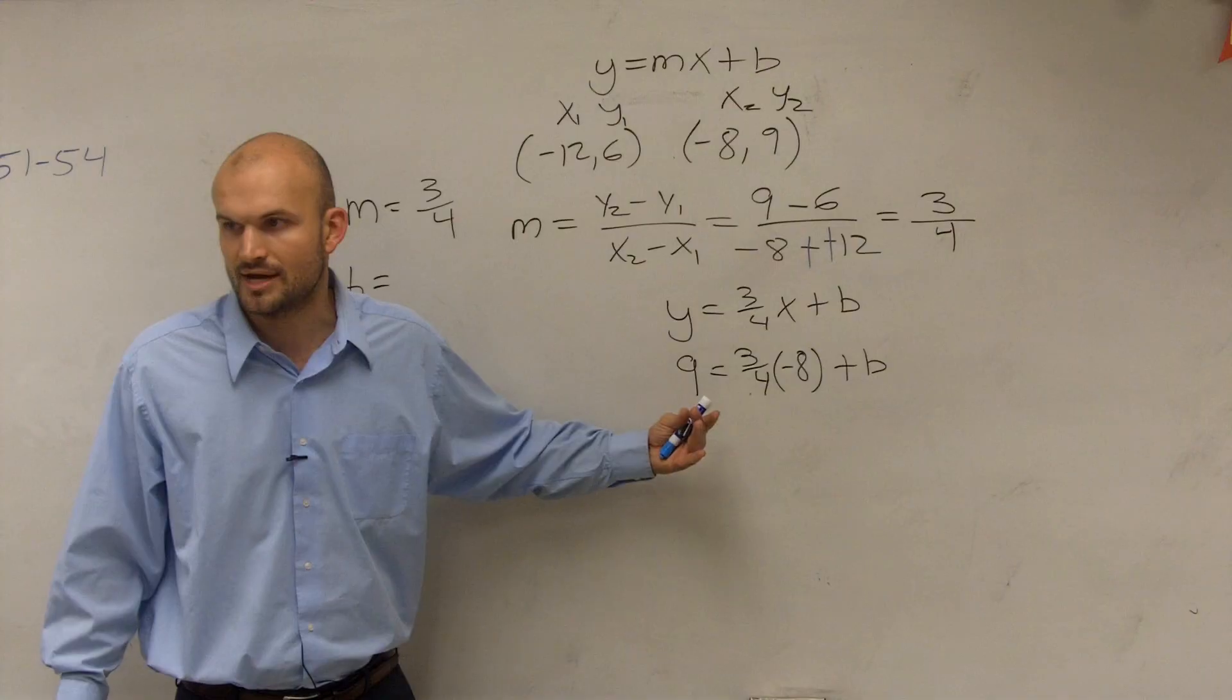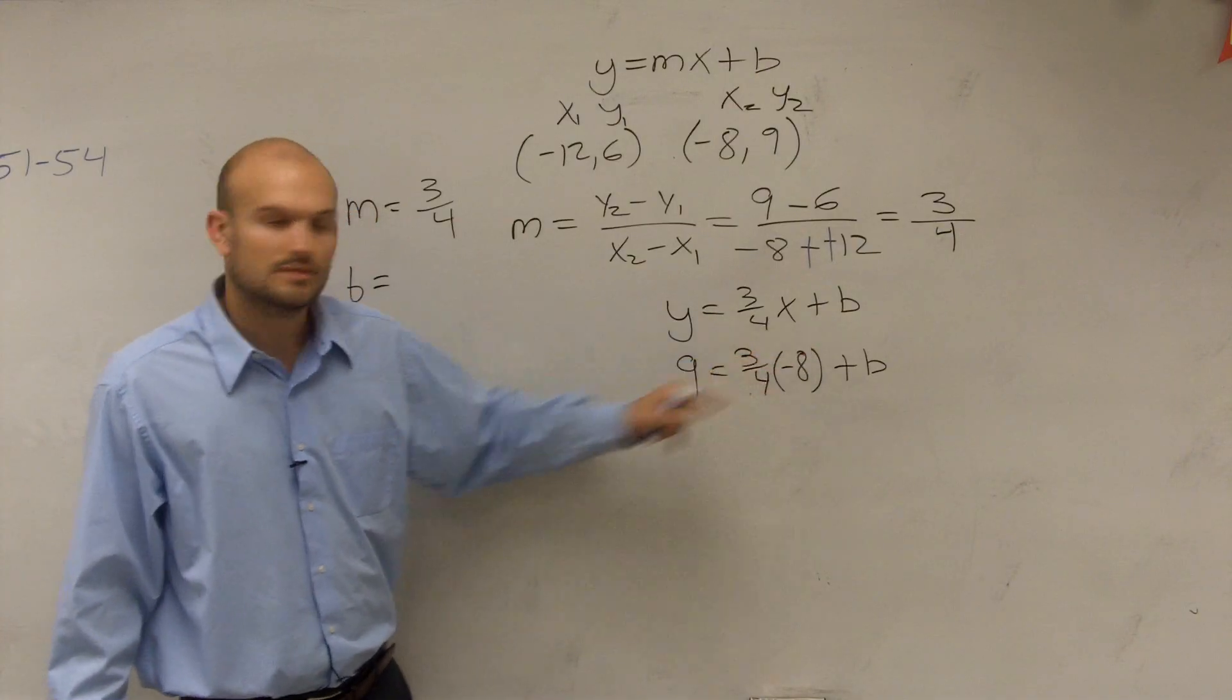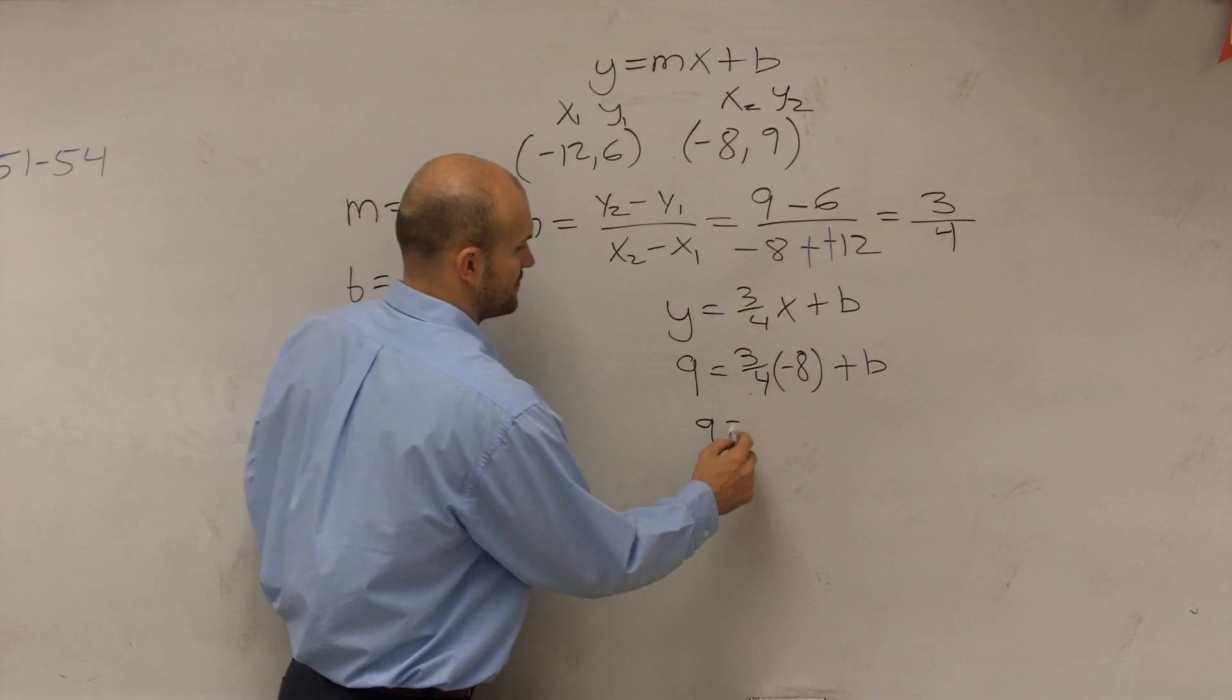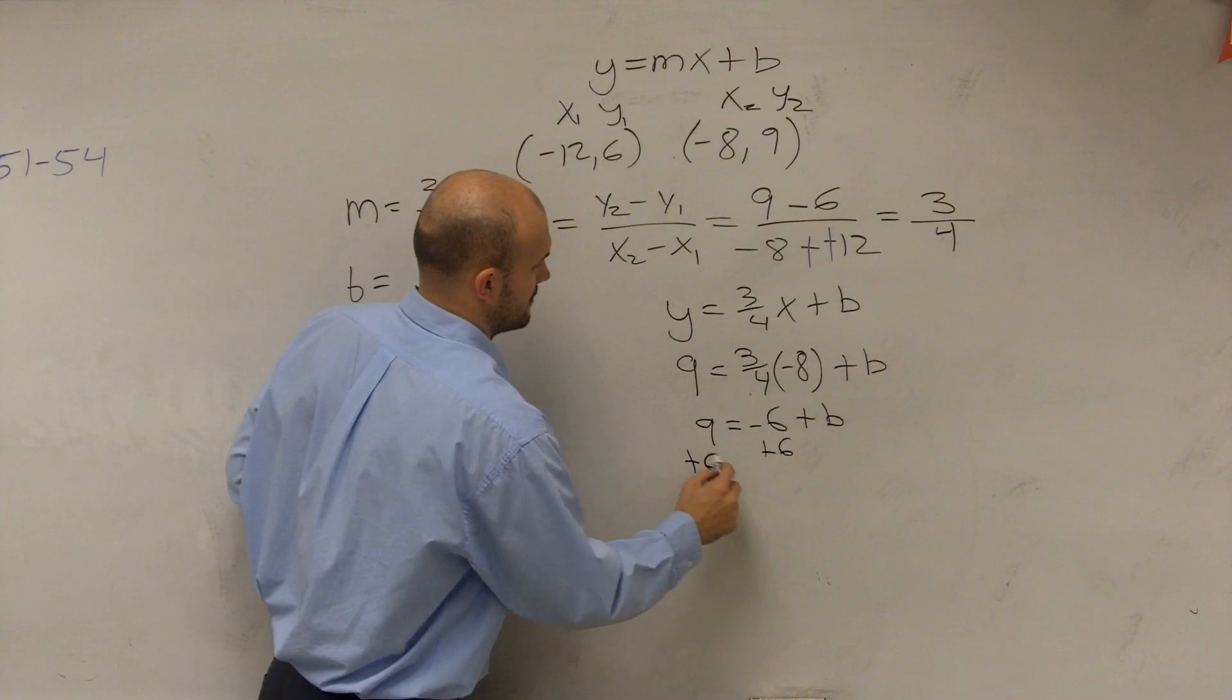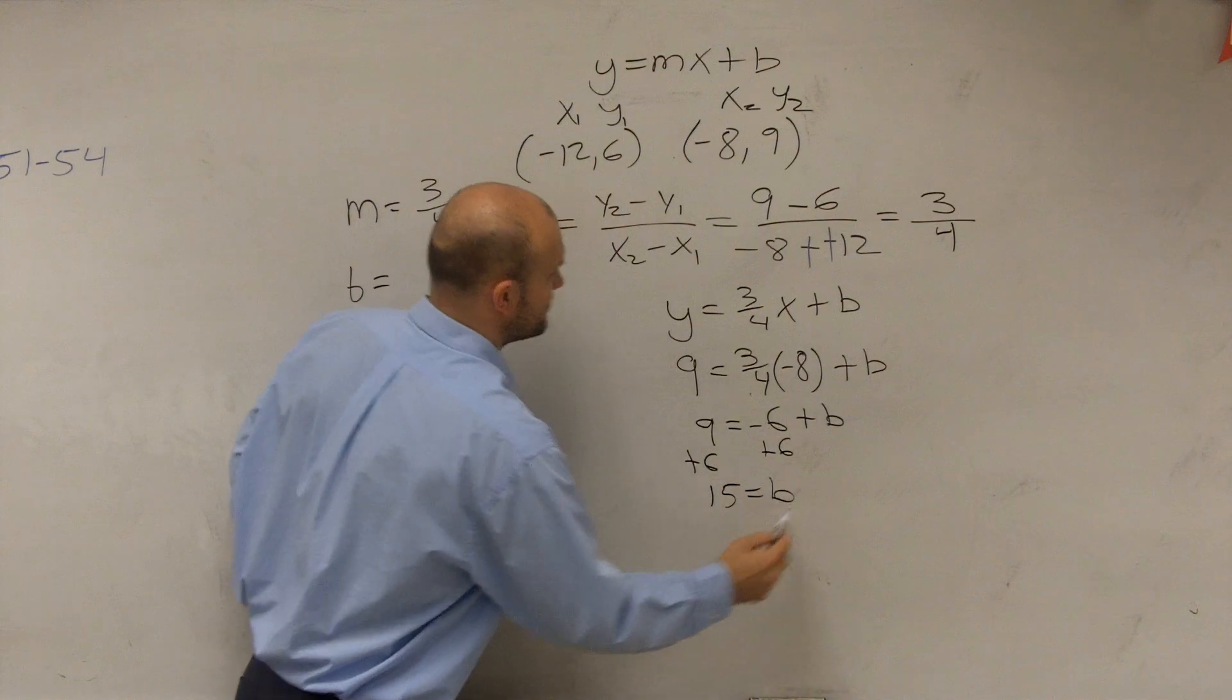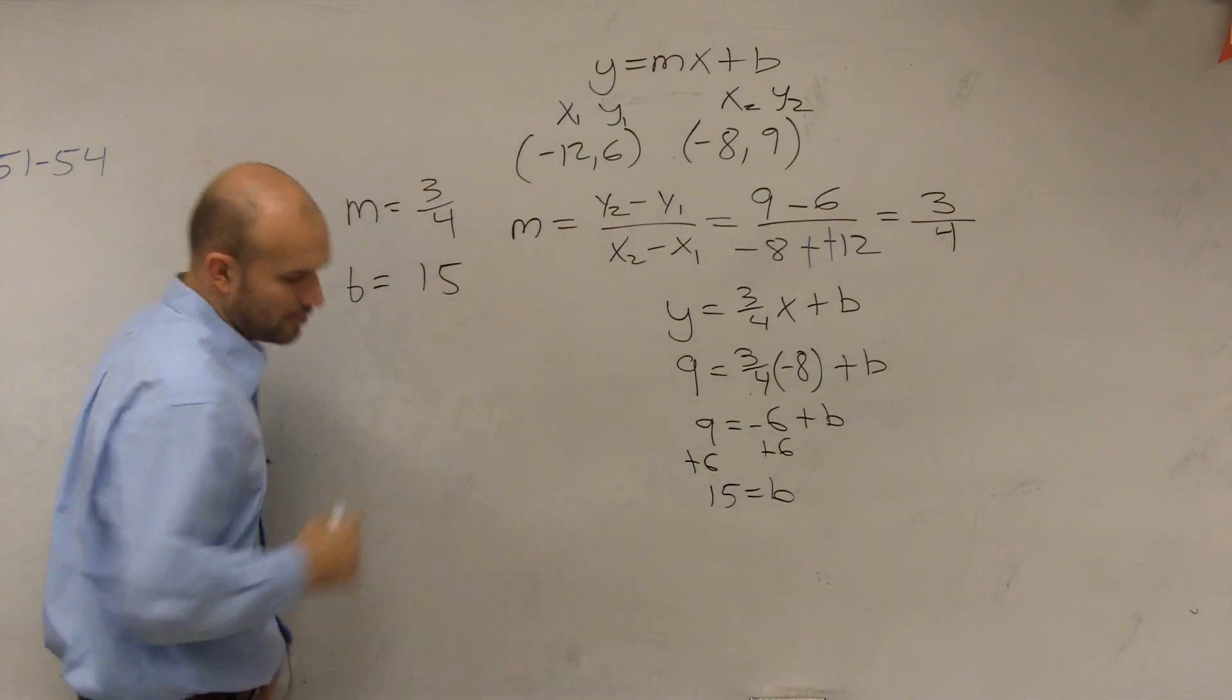So 3 fourths times negative 8. Again, remember how we multiply across, right? So we end up getting negative 6. Add 6, and 15 equals b. So now we know b is 15.